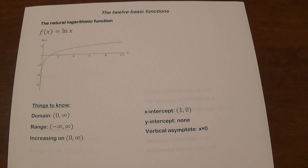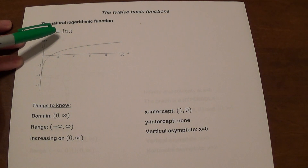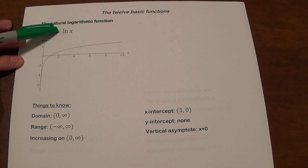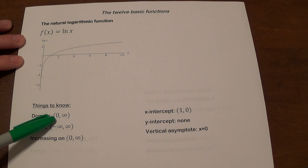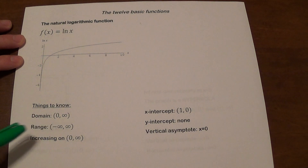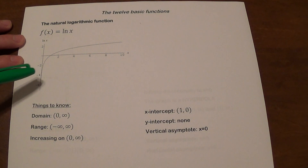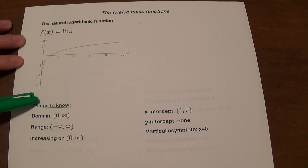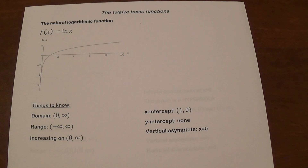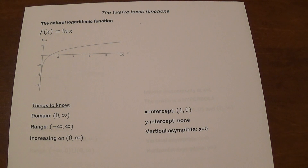The natural logarithmic function, f of x equals ln x. The domain is from 0, not including 0, to infinity, since you can only use positive values of x. But the range is from negative infinity to infinity, because as x gets closer to 0 from the right, the graph drops forever, while on the other side it rises slowly. This function is increasing on its entire domain, has an x-intercept at (1, 0), and has a vertical asymptote at x equals 0.